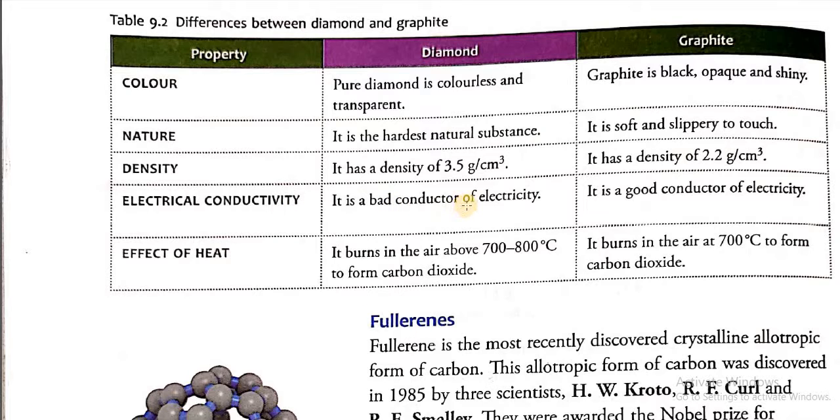For electrical conductivity, diamond is a bad conductor of electricity, that means it does not conduct electricity, and graphite is a good conductor of electricity. Now effect of heat: what happens to the diamond when the temperature is increasing? It burns in the air above 700 to 800 degrees Celsius to form carbon dioxide.